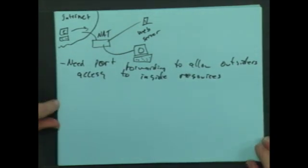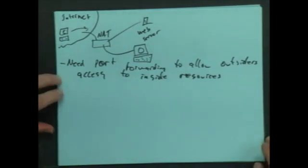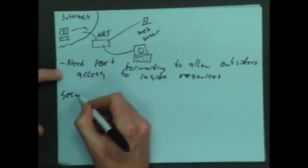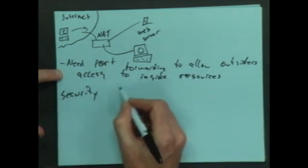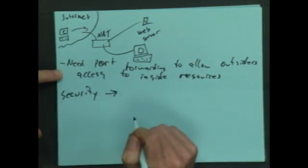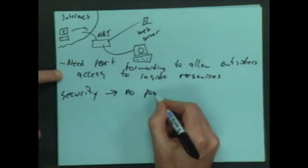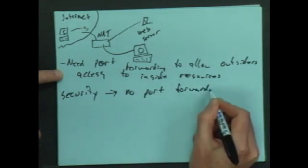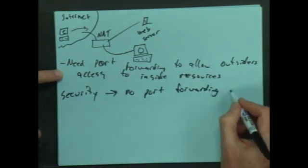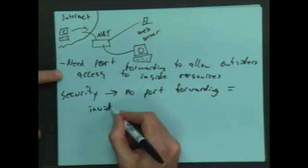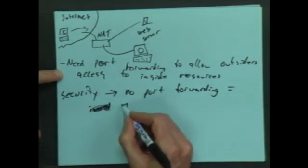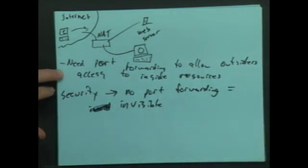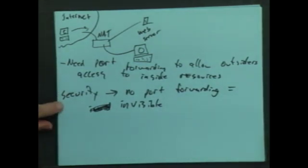Now, we're going to start talking about security. So here we go with security. The way that helps us with security is, basically, unless you're set up with port forwarding, you are completely invisible or almost invisible. We'll talk about a few ways they can get in from the outside. Invisible. So if you have no port forwarding, your network is invisible.